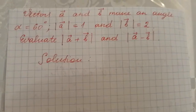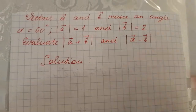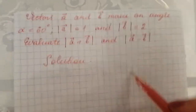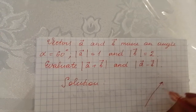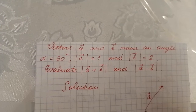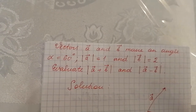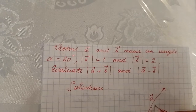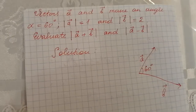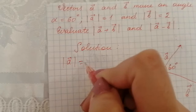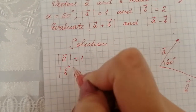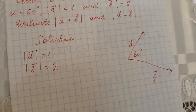Now, solution. We are given that vectors A and B — for example, this is vector A and this is vector B — make an angle of 60 degrees. Absolute value of vector A is equal to 1 and absolute value of vector B is equal to 2. They are given.